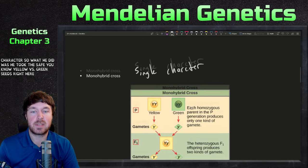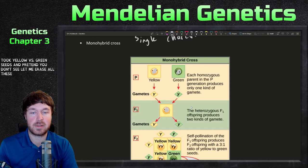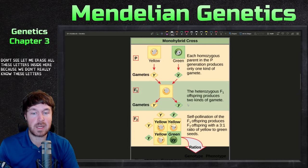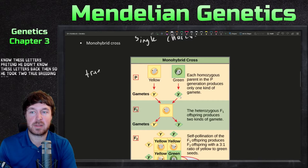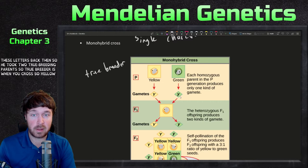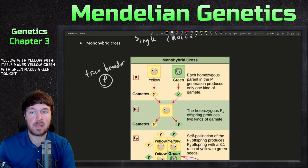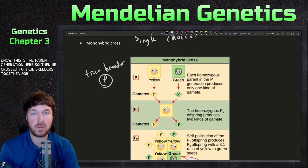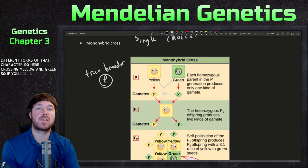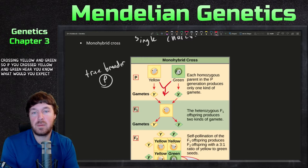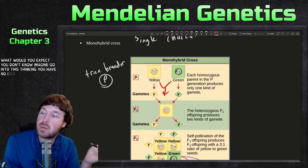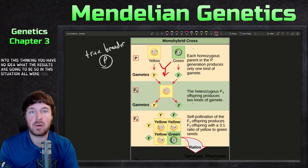What he did was he took yellow versus green seeds. He took two true breeding parents — so yellow crossed with yellow always makes yellow, and green crossed with green always makes green. This is the parent generation. Then he crossed two true breeders together for two different forms of that character, crossing yellow and green. Going into this thinking you have no idea what the results are going to be — in this situation, all offspring were yellow.